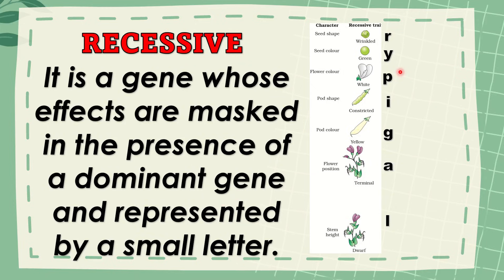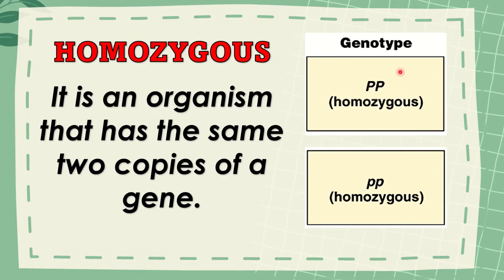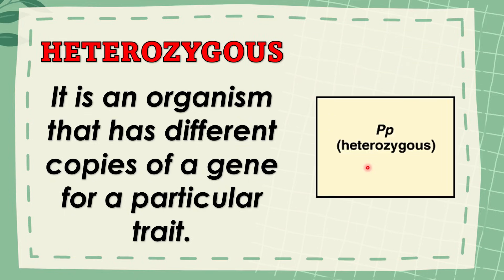Dominant are represented by capital letters, and recessive are represented by small letters. Next, we have homozygous and heterozygous. An organism that has the same two copies of a gene is what we call homozygous. We have dominant homozygous and recessive homozygous. We have heterozygous — it is an organism that has different copies of a gene for a particular trait, just like our example here. We have a dominant P and a recessive P. They have different copies of a gene. Therefore, this is an example of heterozygous.